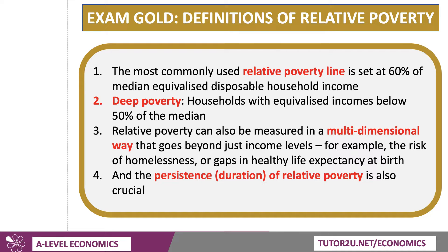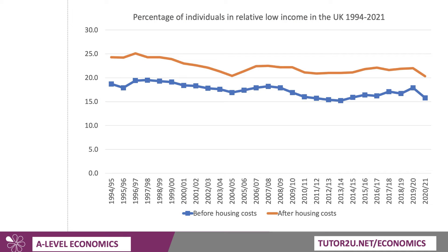Not just the depth of poverty, but also the duration — persistence of relative poverty is also crucial. Can people lift themselves out of relative poverty over time? Looking at the percentage of individuals in relative low income in the UK all the way back to 1994, you can see there has been a gradual fall in relative poverty, backed up by data on the Gini coefficient. Before housing costs is the figure in blue; after housing costs takes into account rents, mortgages, and essential bills.